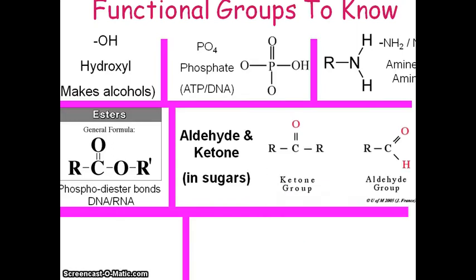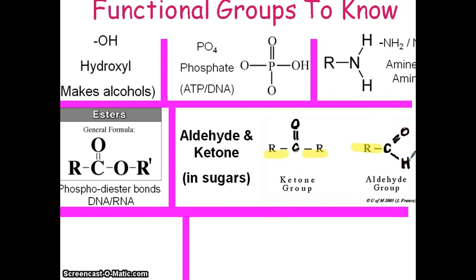Aldehyde and ketone — this is actually in the pre-lab. Both are a carbon double bonded to oxygen. If that carbon double bonded to oxygen is in the middle of a chain with chains on two sides, it's a ketone. If the carbon double bonded to oxygen is on the end — with a little hydrogen — it's called an aldehyde. So it's really the carbon double bonded to oxygen that's important: middle means ketone, end means aldehyde.